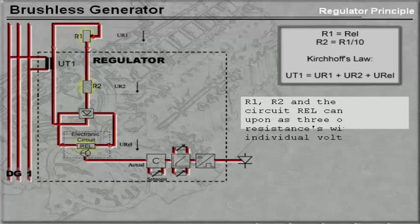R1, R2, and the electronic circuit REL can be viewed upon as three ohmic resistances with individual voltage drops.